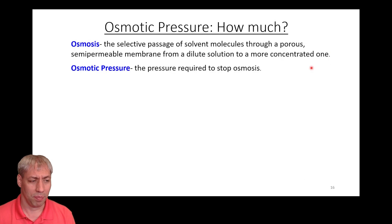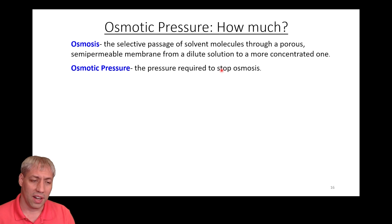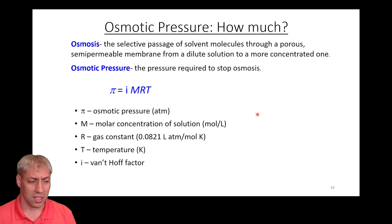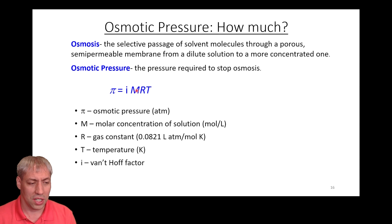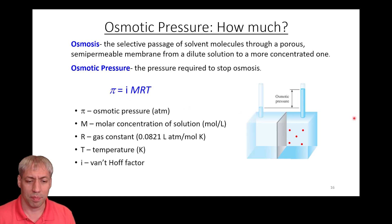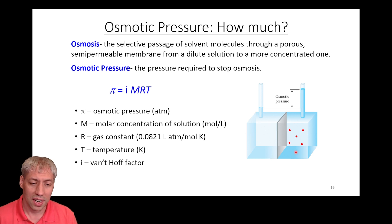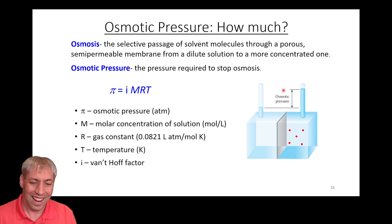Osmosis is the movement of solvent molecules across a membrane from low concentration to higher concentration. Osmotic pressure is the pressure required to stop osmosis. The equation describing osmotic pressure is: π = i × M × R × T, where π is osmotic pressure, i is the van't Hoff factor, M is molarity (moles of solute per liters of solution), R is the gas constant, and T is temperature. If you know the concentration, you can calculate the osmotic pressure. Osmotic pressure represents the difference in volume between the two sides after reaching steady state.